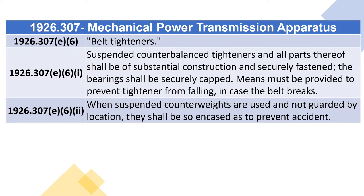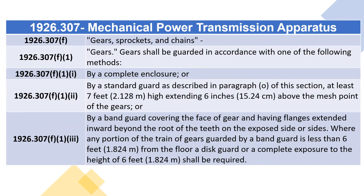1926.307(e)(6) Belt Tighteners: Suspended counterbalance tighteners and all parts thereof shall be of substantial construction and securely fastened. The bearings shall be securely capped, and means must be provided to prevent the tightener from falling in case the belt breaks. When suspended counterweights are used and not guarded by location, they shall be so encased as to prevent accident. 1926.307(f) Gears, Sprockets, and Chains. 1926.307(f)(1) Gears: Gears shall be guarded by a complete enclosure; a standard guard at least seven feet high extending six inches above the mesh point; or a band guard covering the face of the gear.